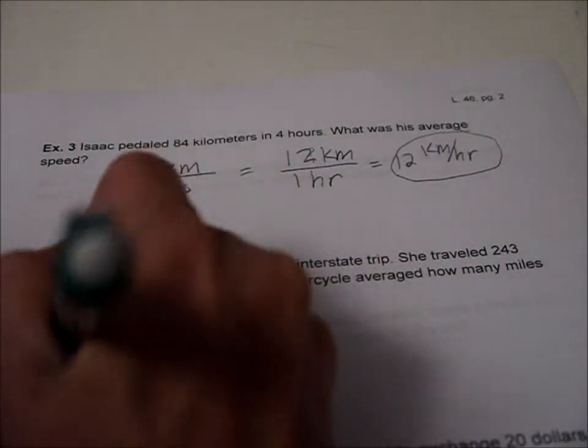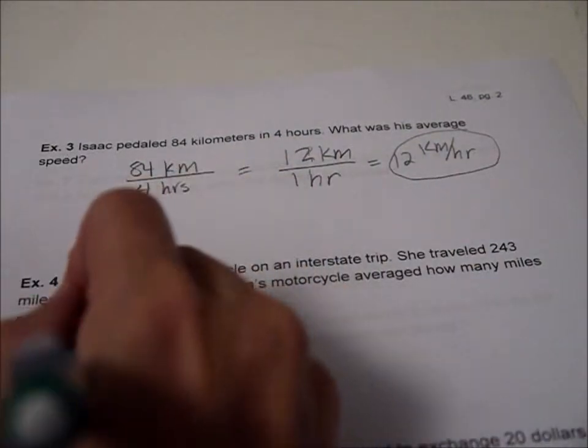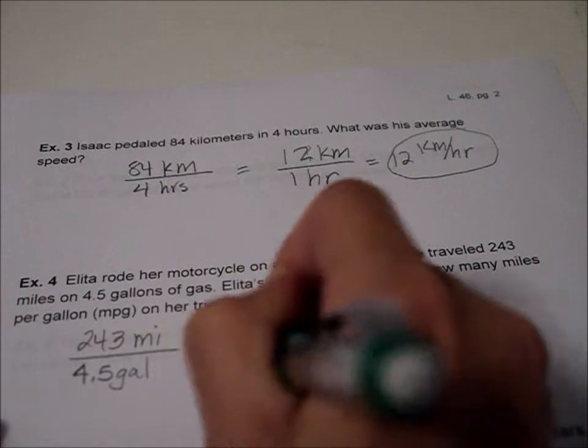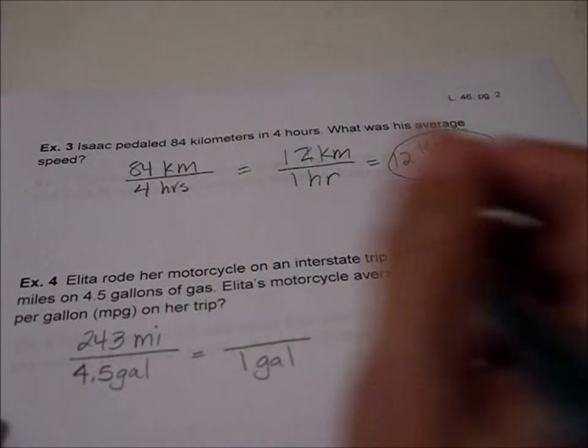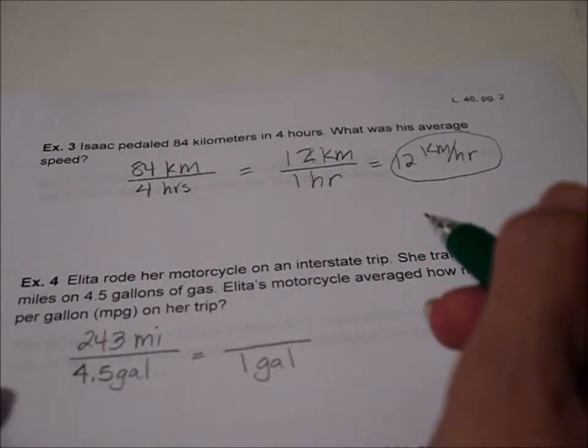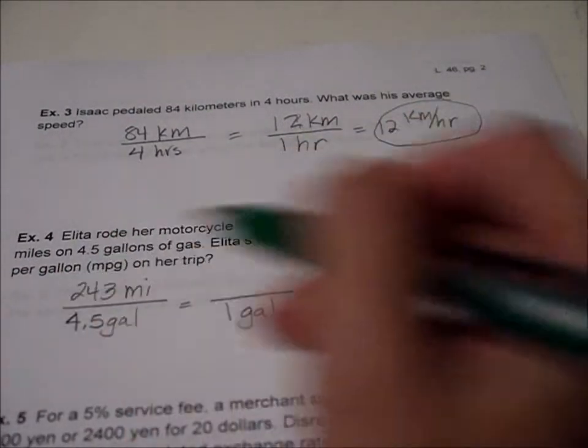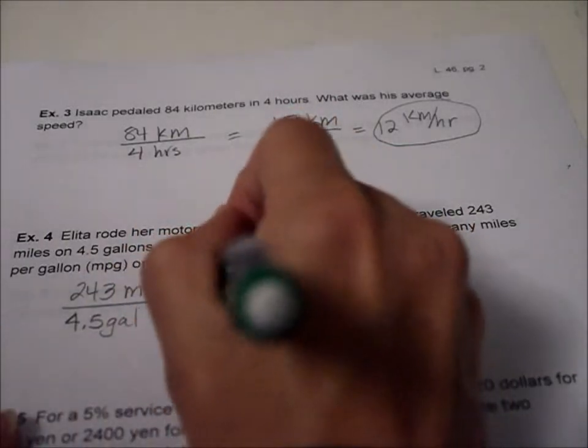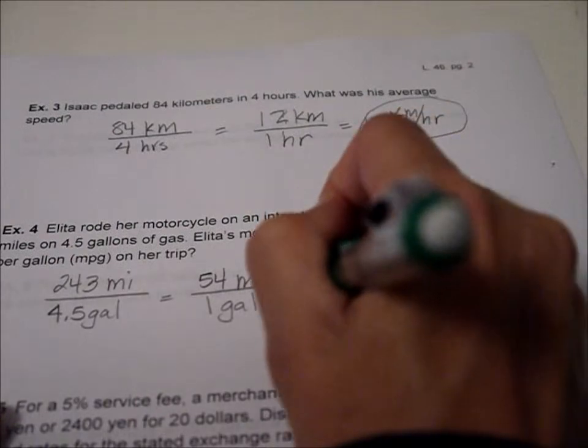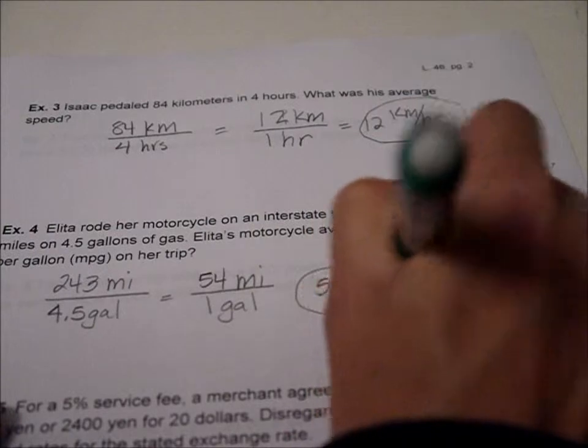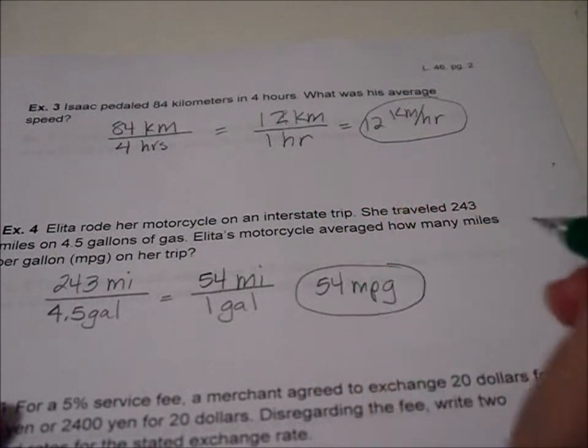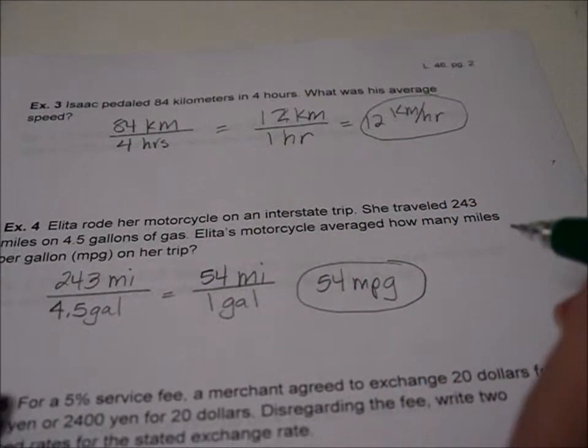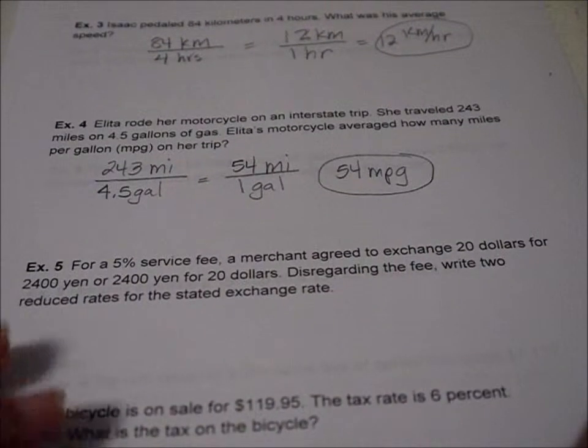So it's just like what we've been doing before. She did 243 miles and 4.5 gallons is what got her there. And we want to know how much she can go with one gallon of gas. So we divide again 243 divided by 4.5. And so when we divide that you get 54 miles in one gallon. So we're going to say 54 miles per gallon MPG. And another way to say that is M over G, miles over gallon. That's actually really good 54 miles per gallon.